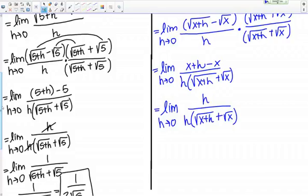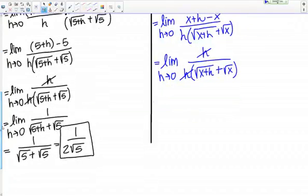Now I see that I have a factor of h in the top and in the bottom, I'm going to cancel those out. Once I do that, I'm left with the limit as h goes to 0 of 1 over root x plus h plus root x. I've done quite a bit of simplification here,